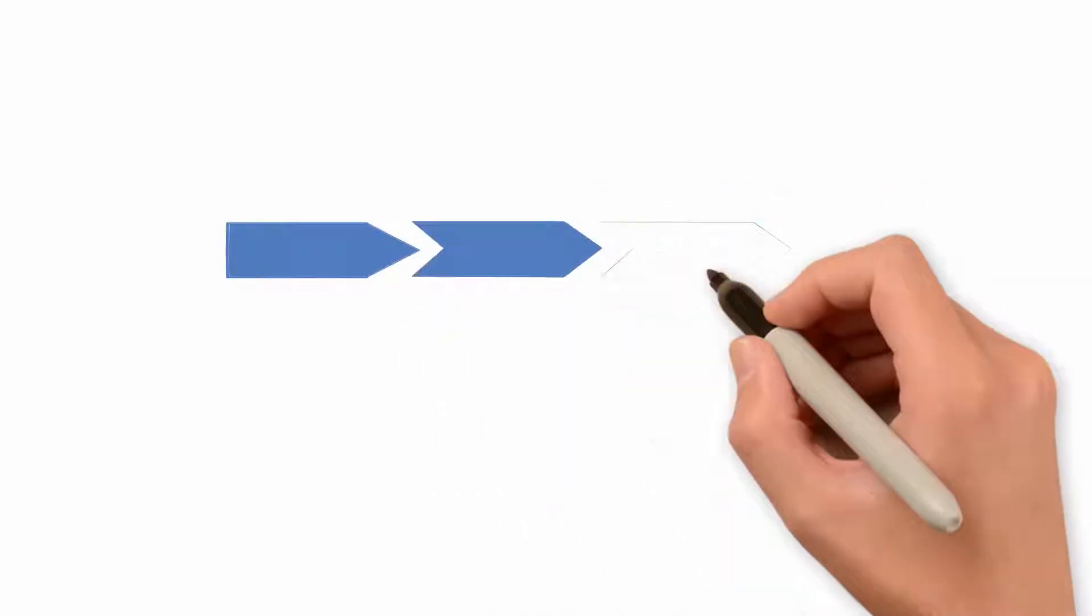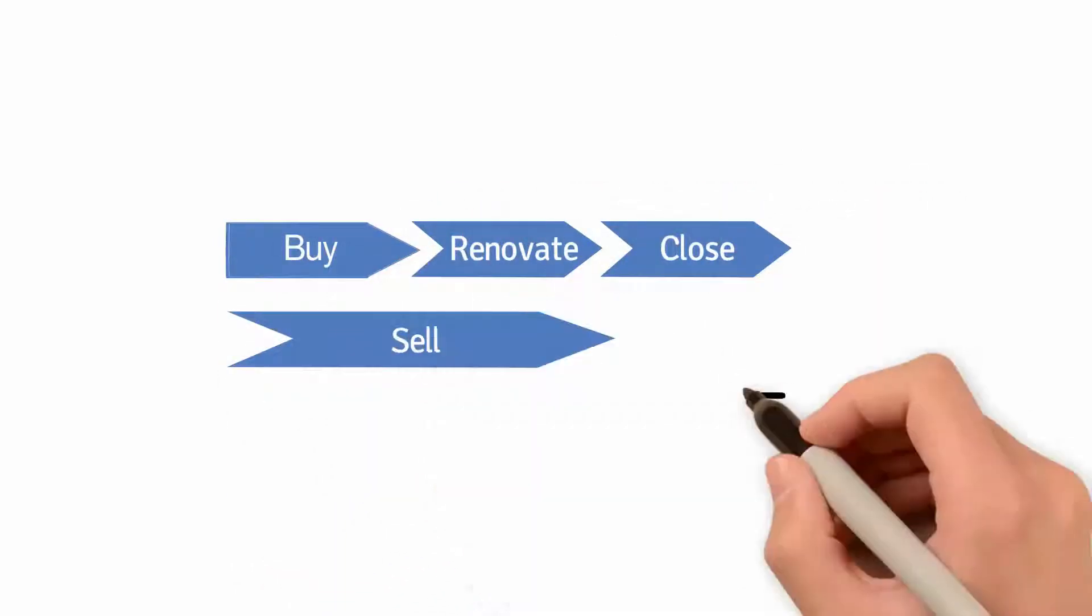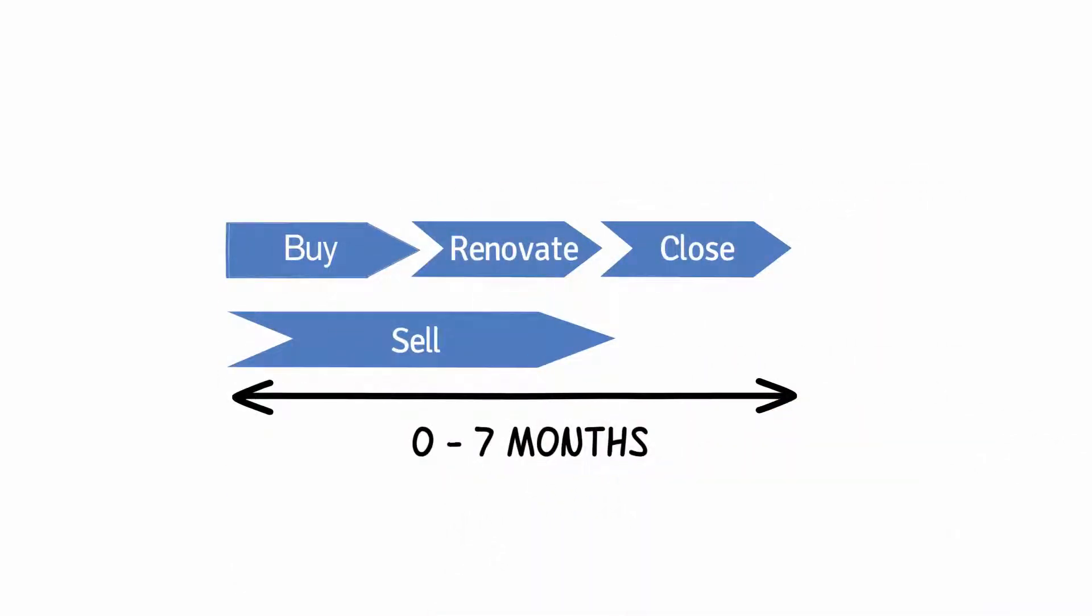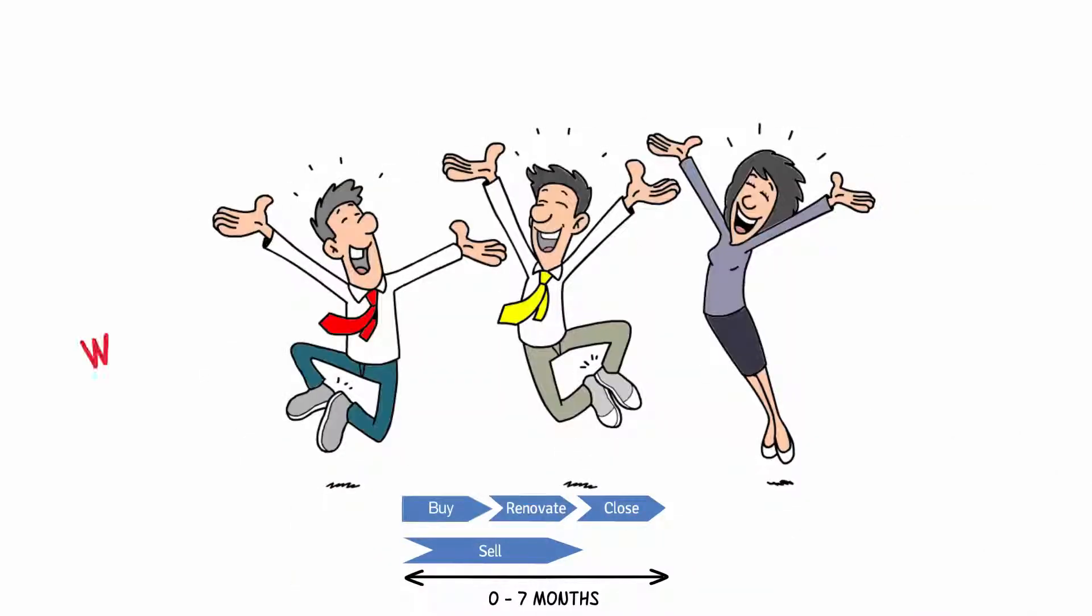The Hip'em platform enables you to take the flip home cycle from 11 months to 7 months or less. Woo-hoo!